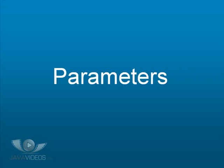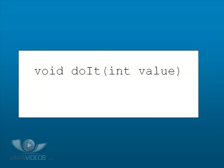Parameters are variables passed into methods. We have seen an example of this in the main method from module 1. Here we have a method called DOIT, which is passed a variable called VALUE that is declared as an INT. This type of variable is called a parameter and can only be used within the method.